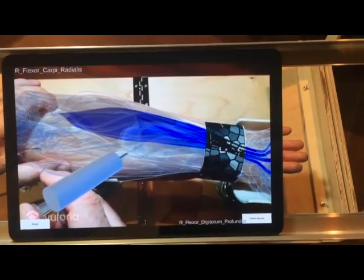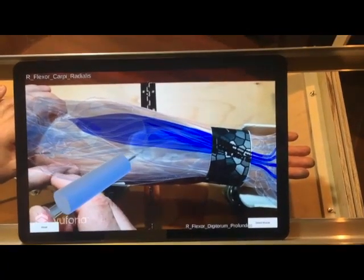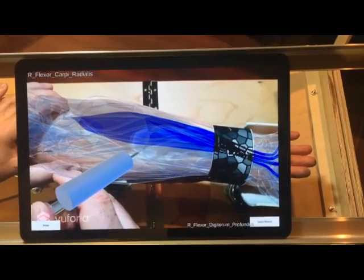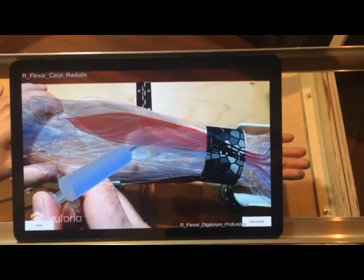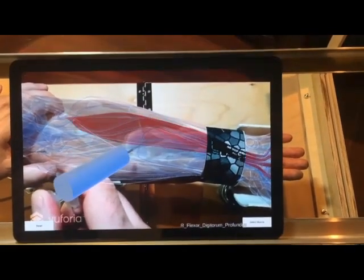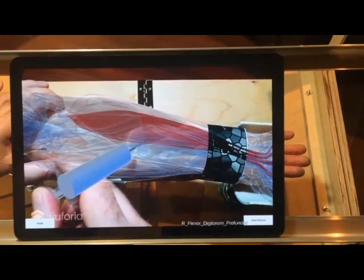The MyoGuide ARM is an excellent learning tool to reinforce toxin injection technique. The lifelike model can be palpated to provide realistic tactile feedback.